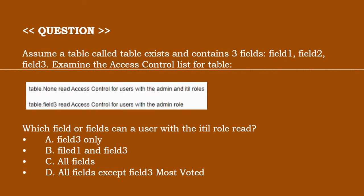Next one. Assume a table exists and contains field1, field2, and field3. Examine the access control list for the table. See the given picture.